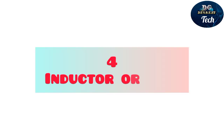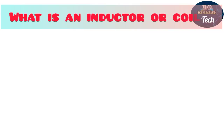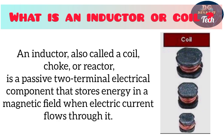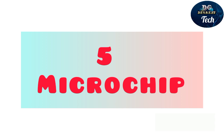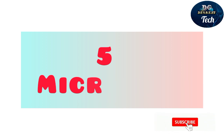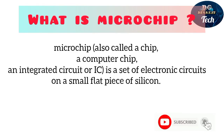We have the inductor, or coil. An inductor — also called a coil, choke, or reactor — is a passive two-terminal electrical component that stores energy in a magnetic field when electric current flows through it.